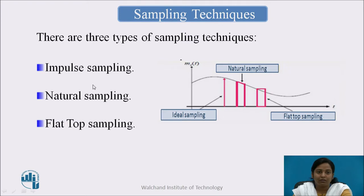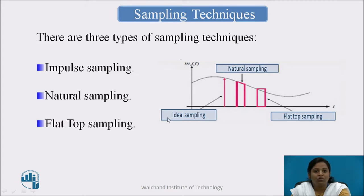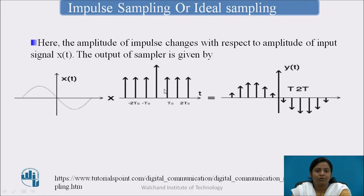Next are the sampling techniques. There are three types of sampling techniques, depending on which type of sampling function is used. First is impulse sampling or ideal sampling. Second is natural sampling. And third is flat-top sampling.